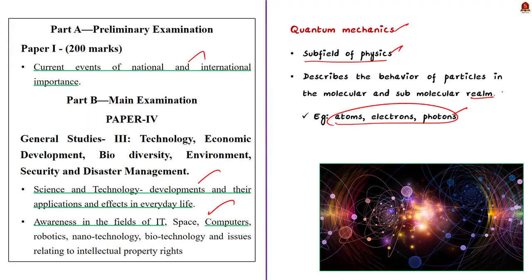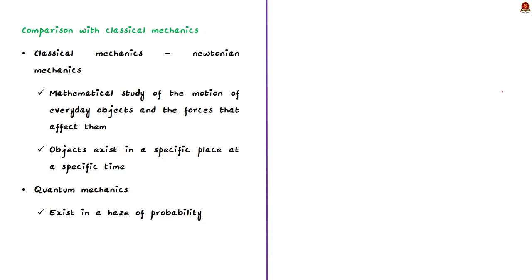The results of quantum mechanics are often extremely strange and counter-intuitive. I will tell you why. On the scale of atoms and electrons, many of the equations of classical mechanics ceases to be useful. Now you should know what is classical mechanics. It is often called as Newtonian mechanics because nearly the entire study builds on the work of Sir Isaac Newton. The mathematical study of the motion of everyday objects and the forces that affect them is called classical mechanics.